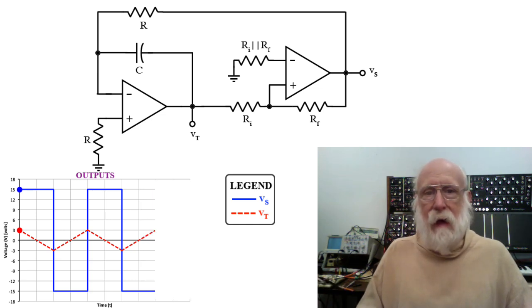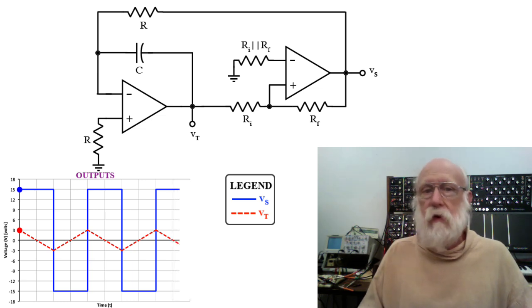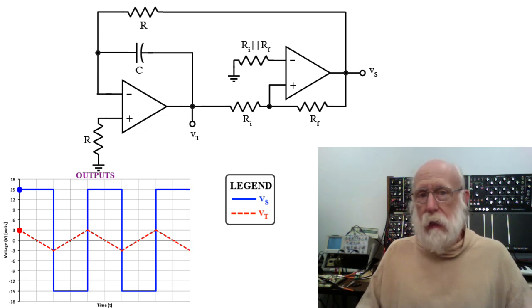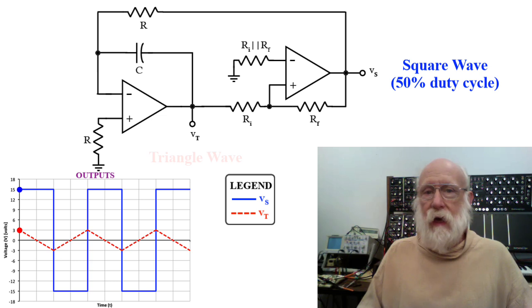And since the time for the discharge and recharge of the capacitor is equal, that square wave is going to have a 50% duty cycle. In other words, it spends exactly the same amount of time high as it does low. So now you have an oscillator that produces two different waveforms as its output, a square wave and a triangle wave.